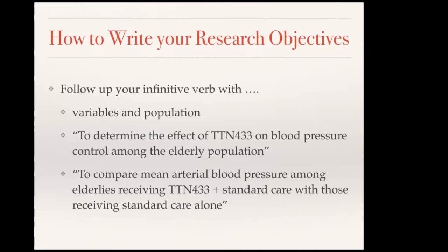After you decide on what you want to do — that's the most direct way of telling people what you want to do — you follow it up with the variables and the population. For example, 'to determine the effect of an experimental drug, TTN-433, on blood pressure control among the elderly population.' Or, 'to compare mean arterial blood pressure among elderly receiving TTN-433 plus standard care and those receiving standard care alone.' In this research objective, it's very clear what you want to do, what you're going to measure — blood pressure control or mean arterial blood pressure — and it's specific on the population, which is the elderly, very measurable because of the blood pressure, and time-bound because you'll see whether you have good control or not.